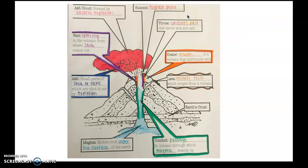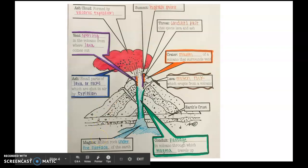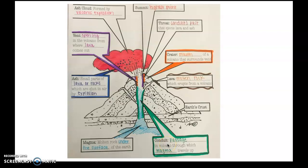The summit is the highest point. The throat is where the conduit's path ejects the lava or ash. The crater is the mouth. Lava is molten rock on the earth's surface, and magma is molten rock under the earth's surface. The conduit is the passage through which magma travels. Ash are small particles of lava or rocks shot into the air after an explosion. And the vent is the opening of the volcano.